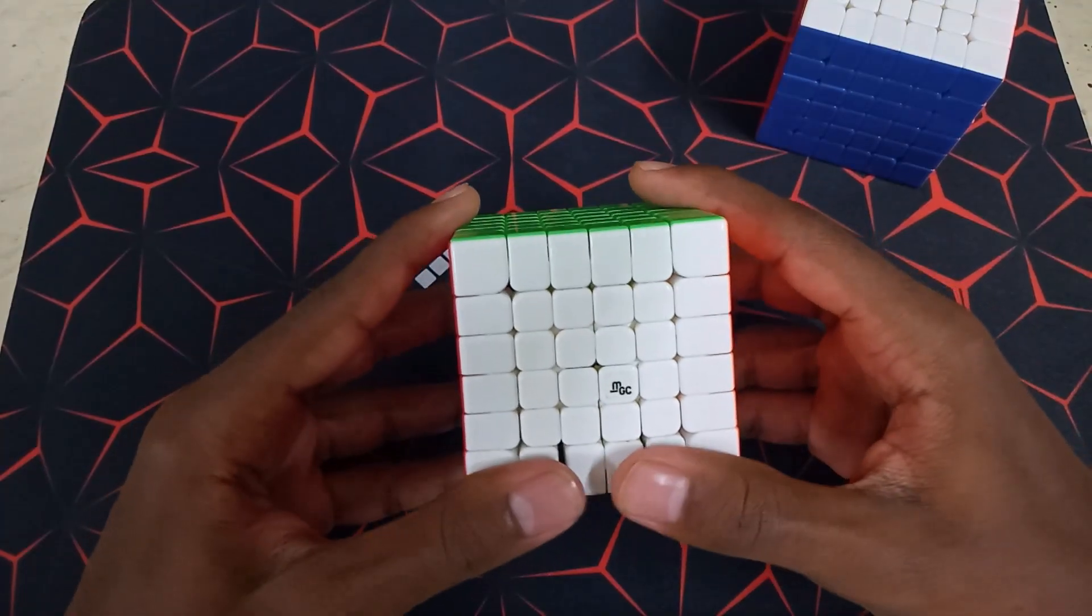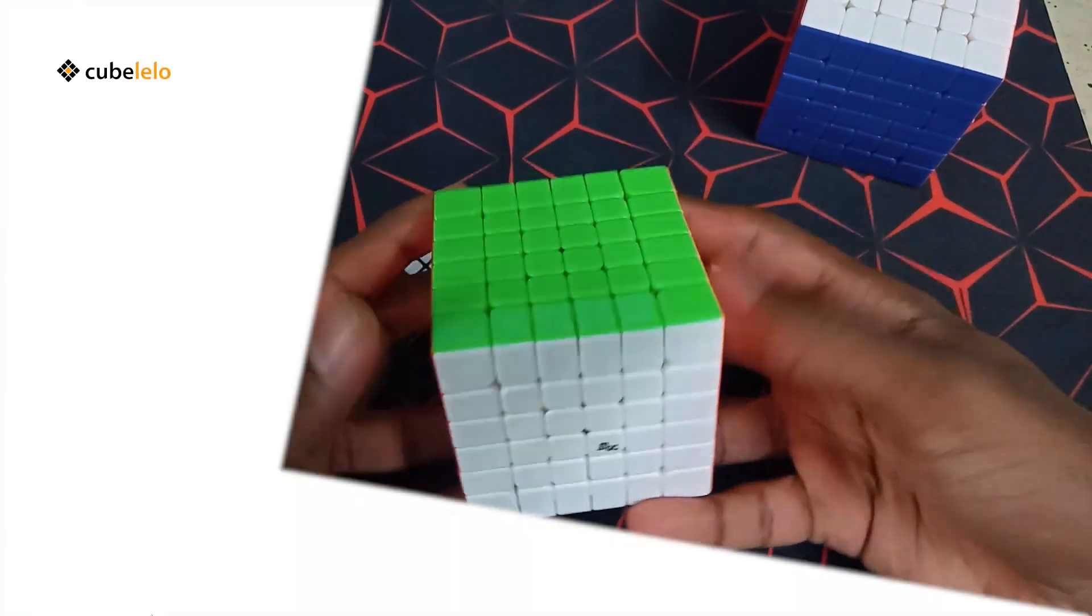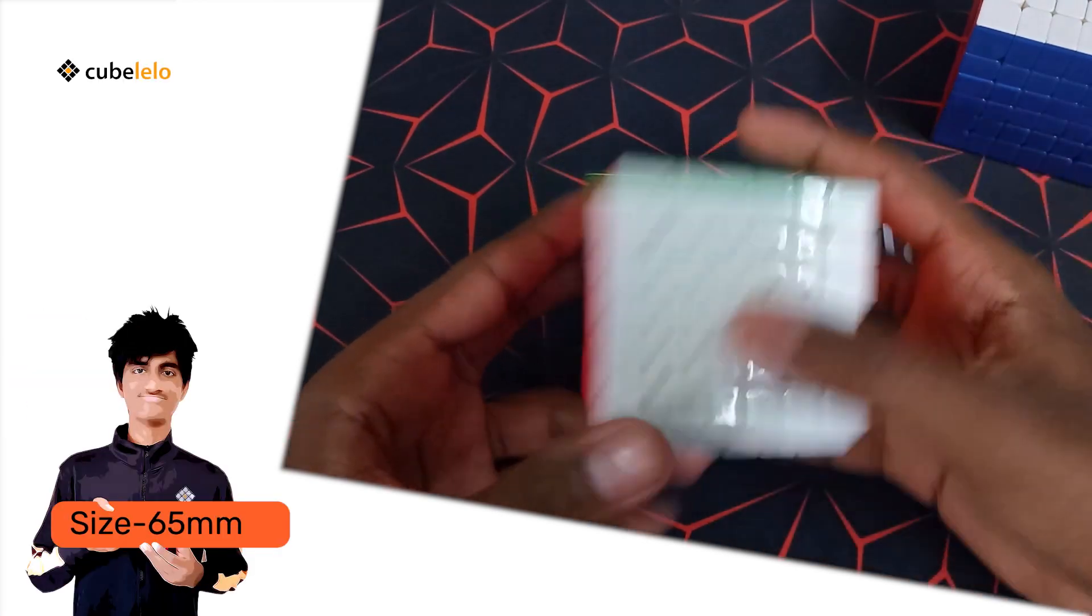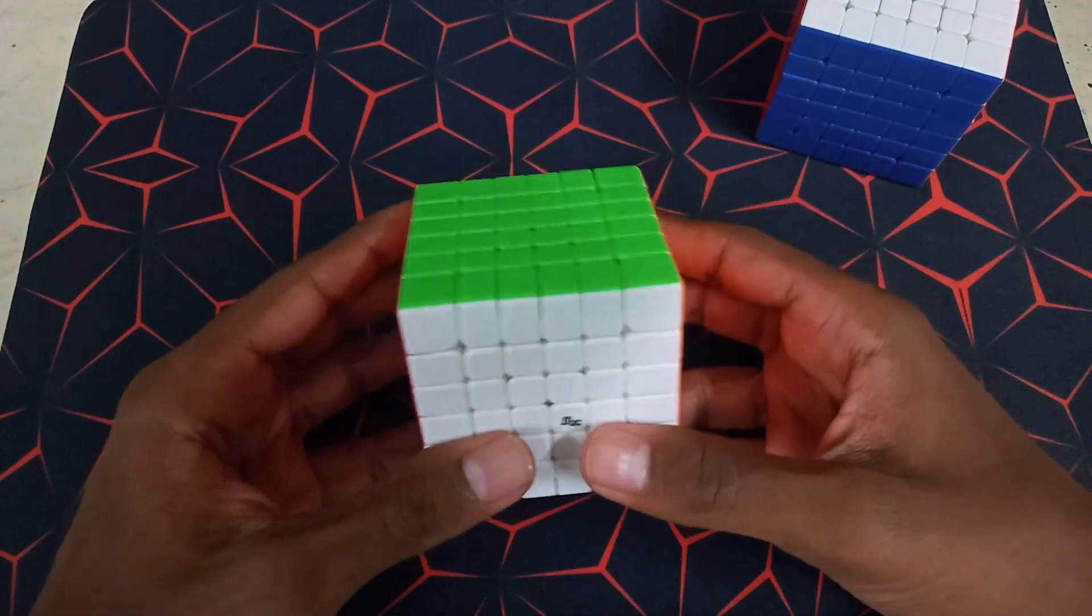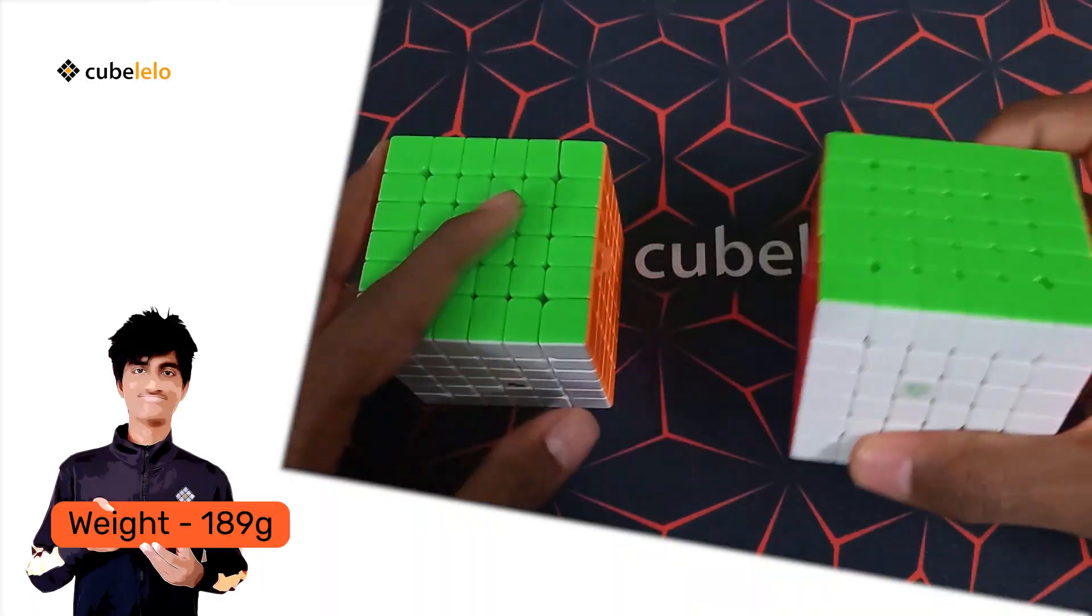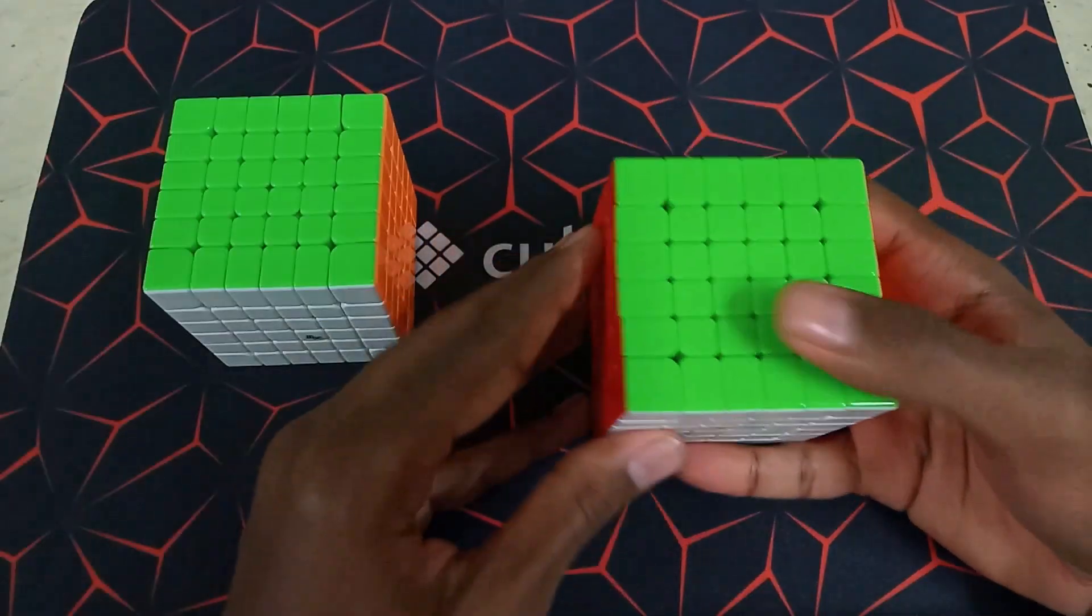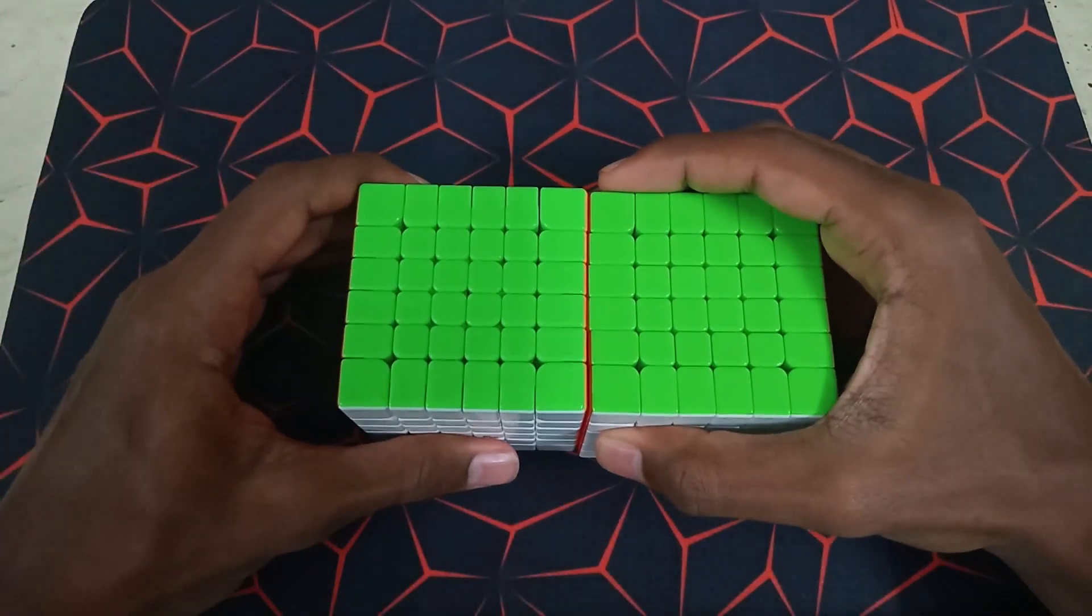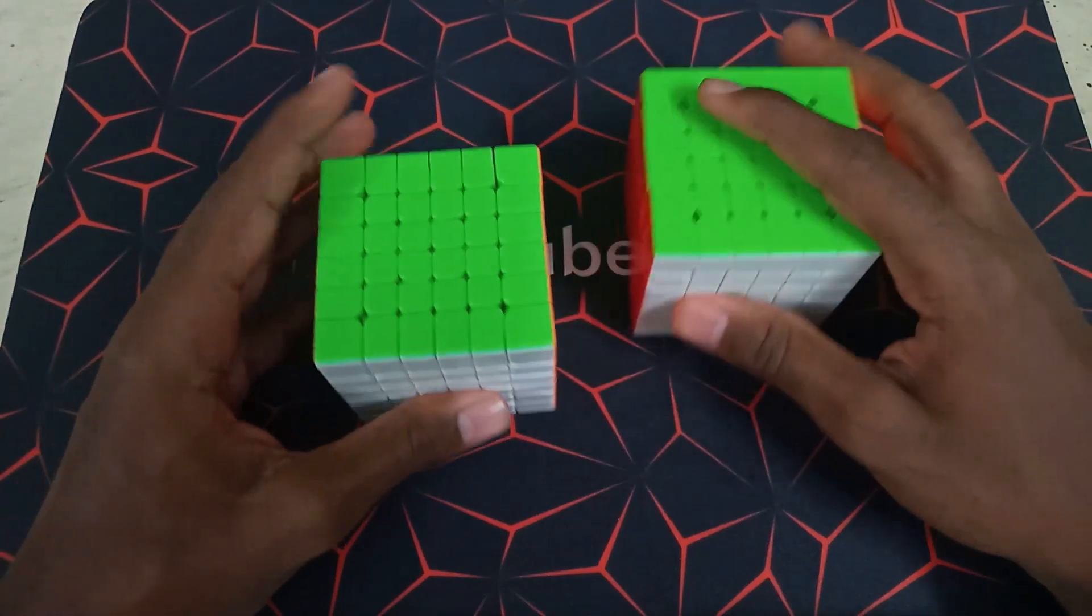First we talk about the weight and the size of the puzzles. So the MGC 6x6 weighs about 174 grams and is 65 millimeters across. I would say for a 6x6 it's around average weight, it's not too heavy. While the Shadow M weighs slightly more, at 189 grams, and it's quite noticeable. It's like 15 grams heavier, but it's the exact same size, 65 millimeters across. As you can see, they're the exact same size.